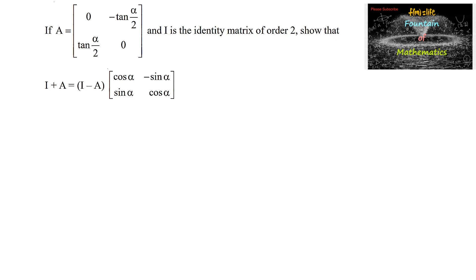If A is equal to the matrix [0, -tan(α/2); tan(α/2), 0], a 2×2 matrix, and I is the identity matrix of order 2, so I equals [1, 0; 0, 1], a 2×2 matrix. Show that I plus A is equal to I minus A times [cos α, -sin α; sin α, cos α].